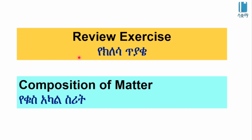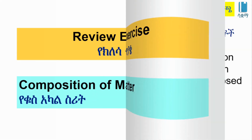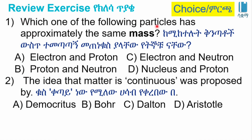Hello everyone, welcome to the review exercise. Which one of the following particles has approximately the same mass? A: electron and proton. B: proton and neutron. C: electron and neutron. D: nucleus and proton. The answer is B, proton and neutron.